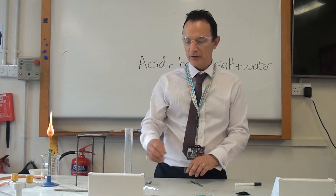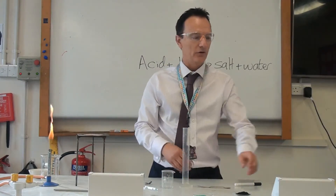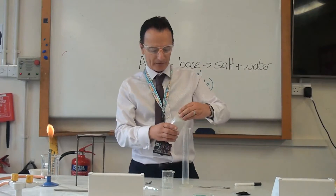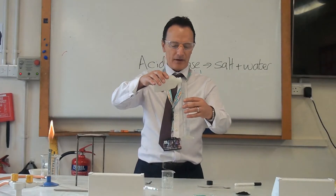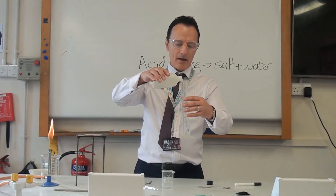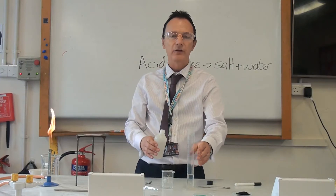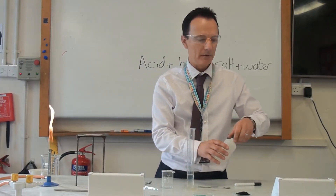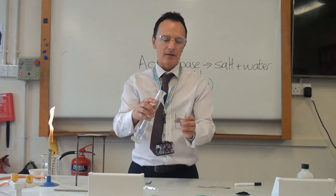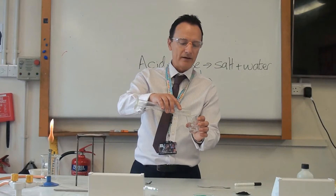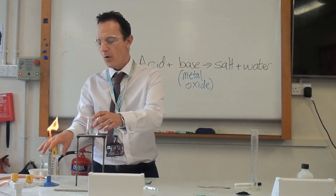The first thing we need to do is measure out the acid. We are going to measure out 25cm³ of hydrochloric acid using a measuring cylinder. If you get asked to describe a method in the exam, make sure you are saying exactly what measurements you are using and describing what equipment you are going to use to measure it. We have measured 25cm³ of the acid and we are going to place that into a small beaker so that we can warm up the acid.